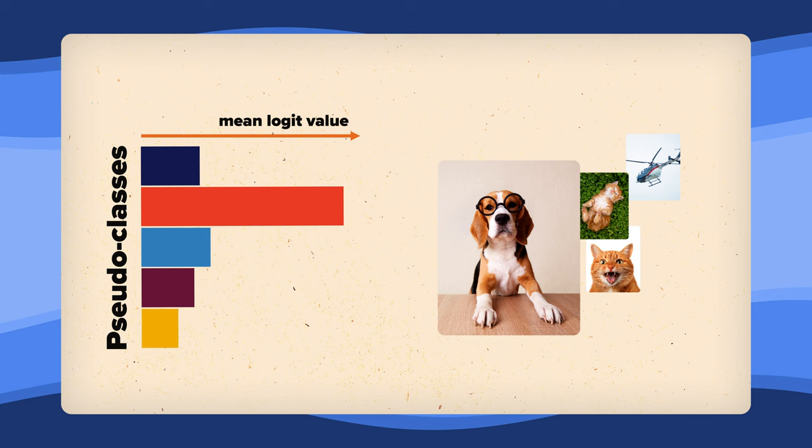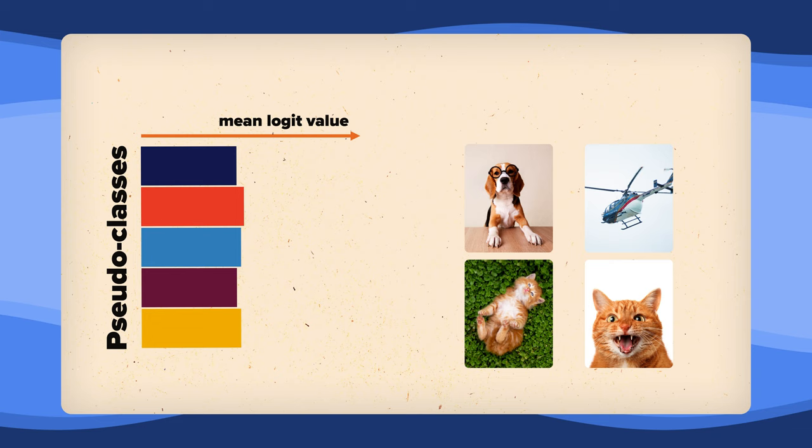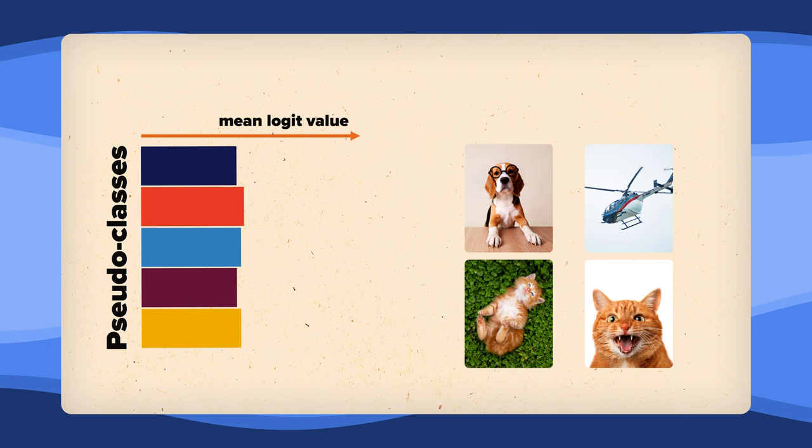This way, the model will learn about different objects in a balanced way. The model is encouraged to learn about a variety of classes and features, rather than focusing on a single dominant class.